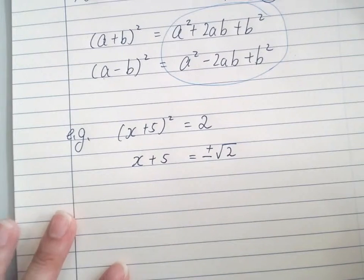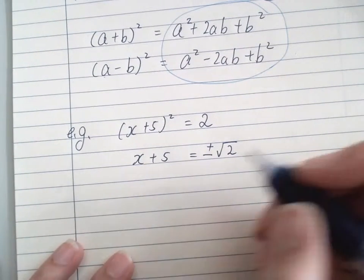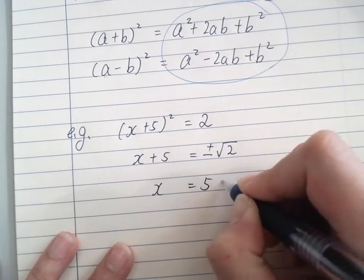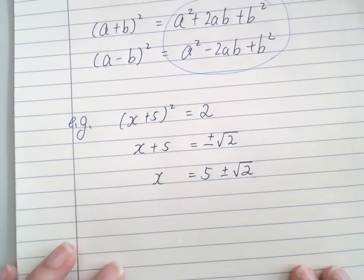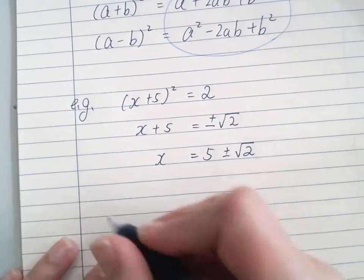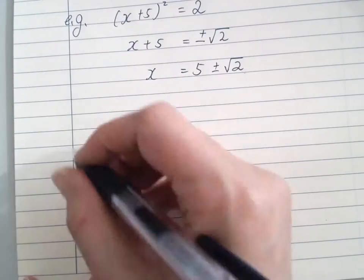Remember there's more than one answer for a square root. Then we move the 5 to the other side, giving us two answers. Now for the real stuff, when we use completing the square...